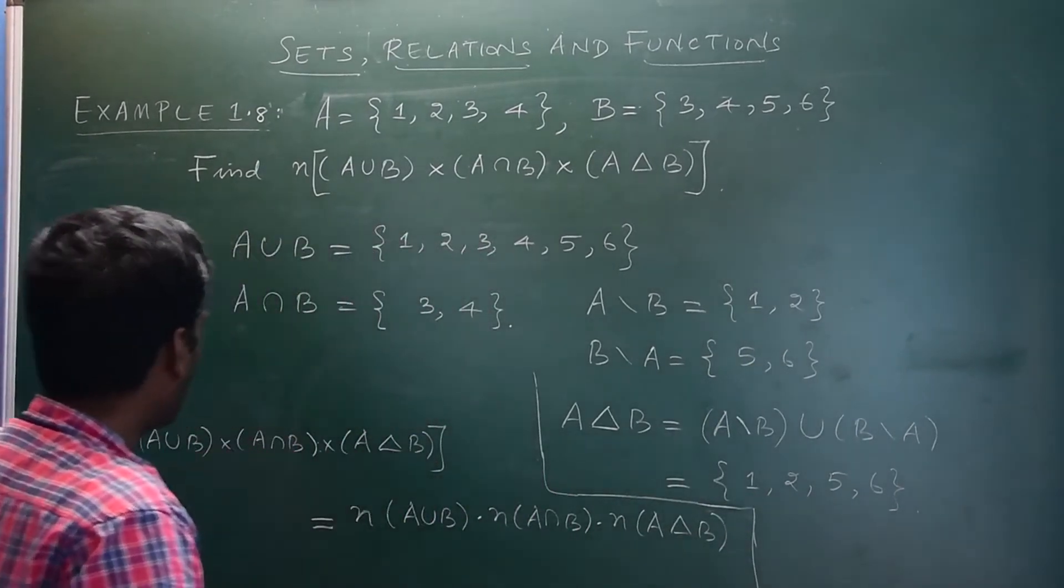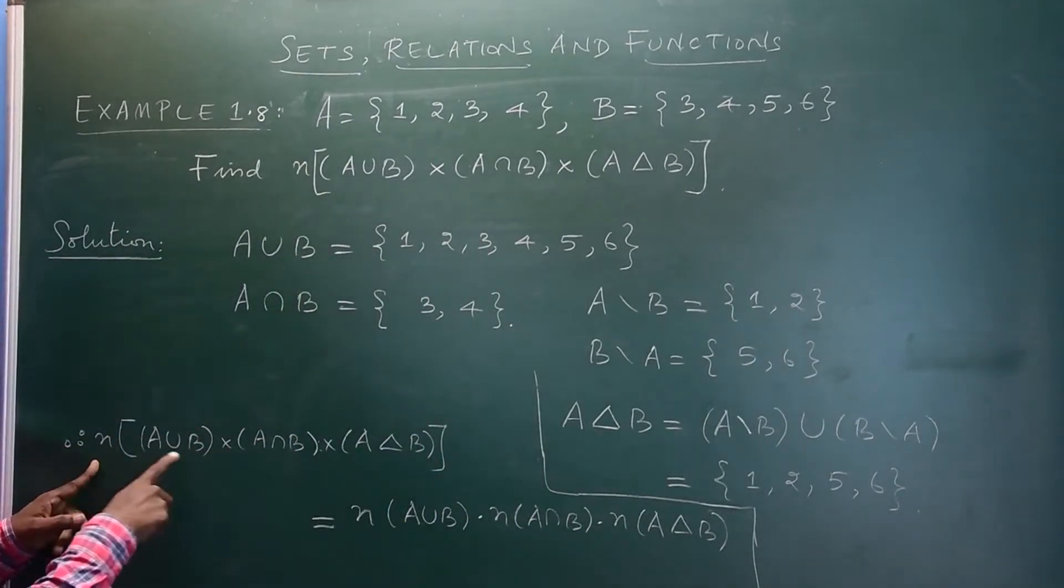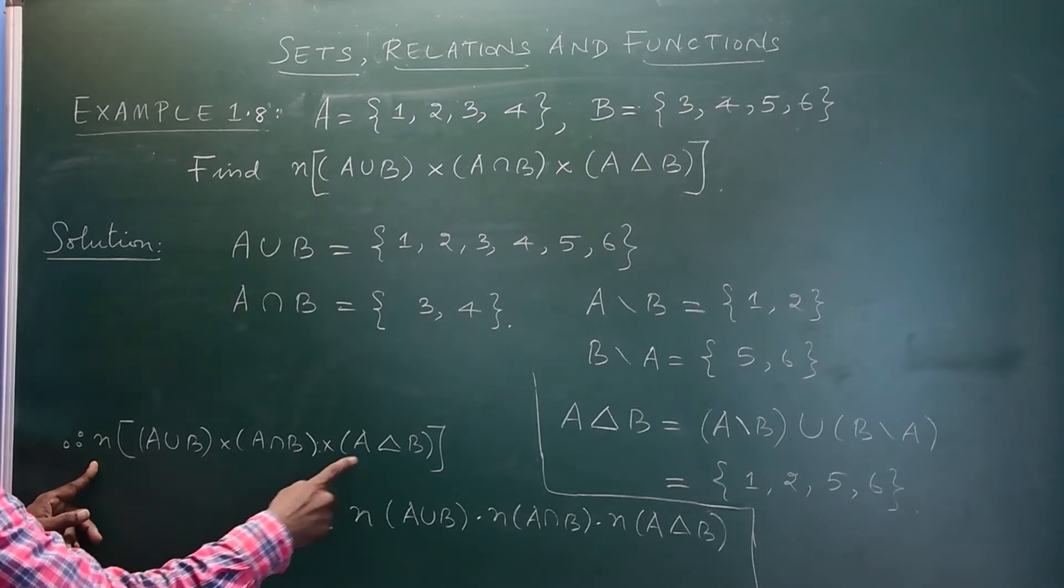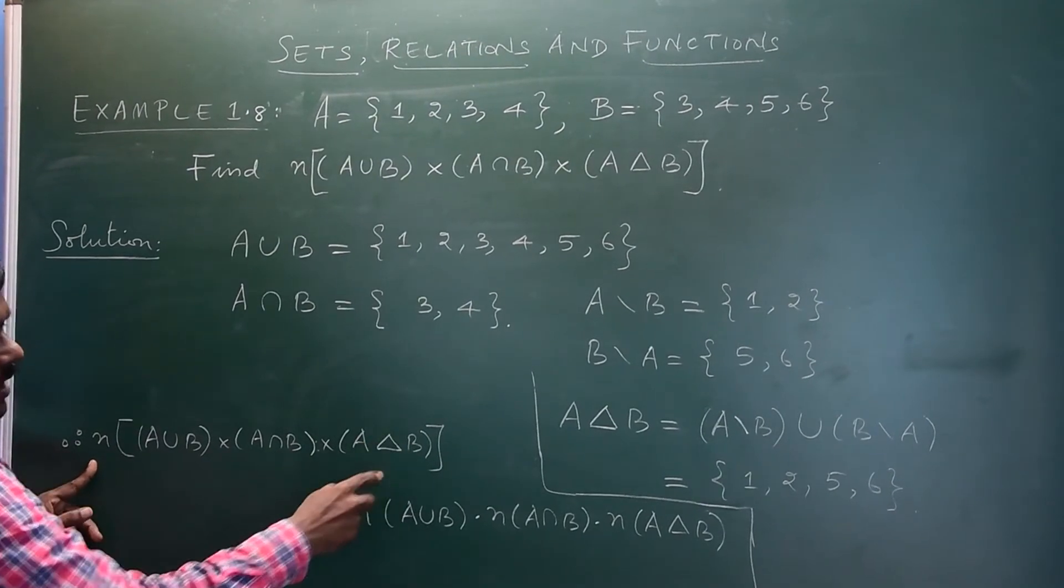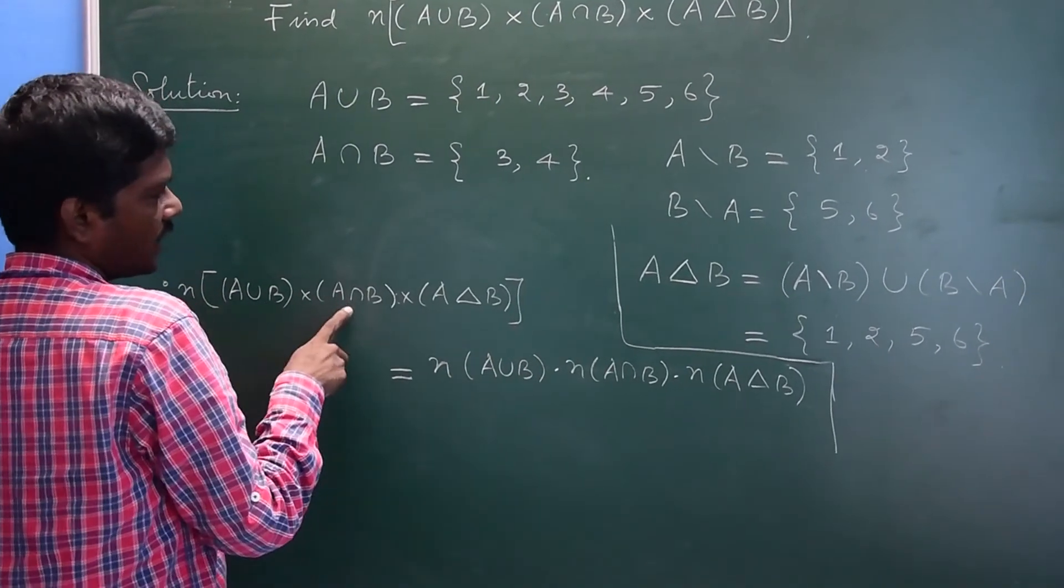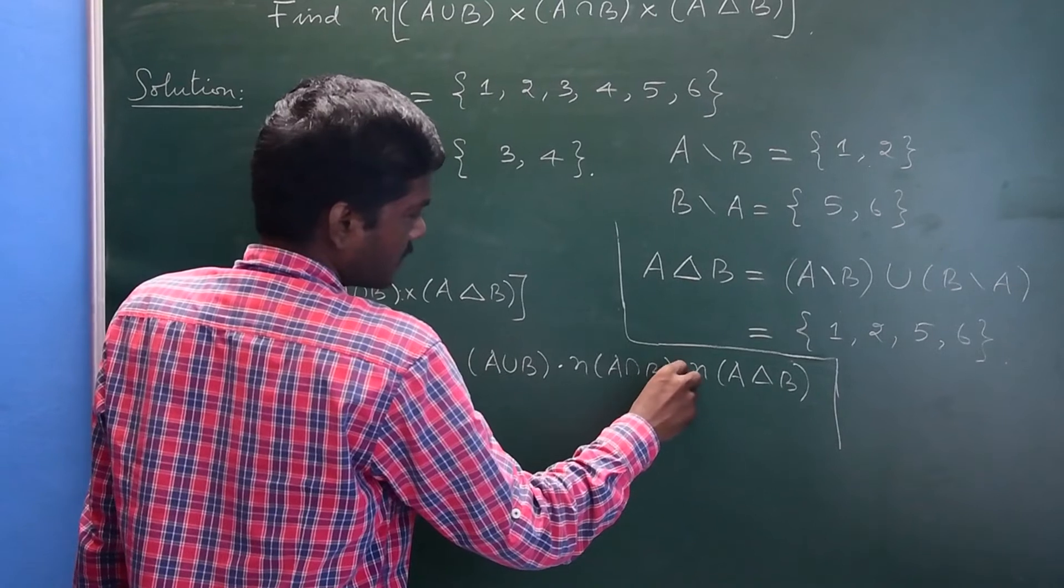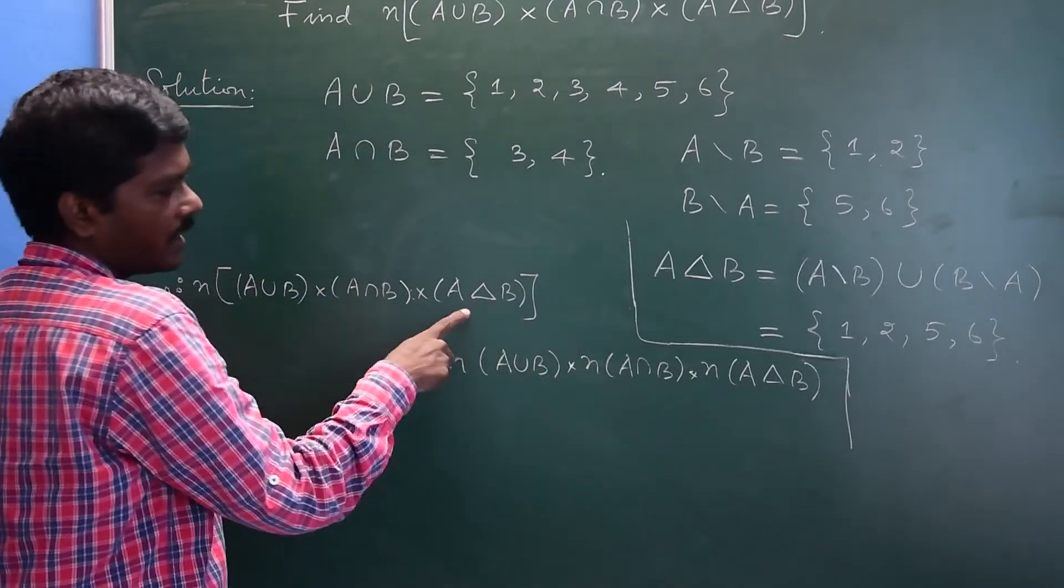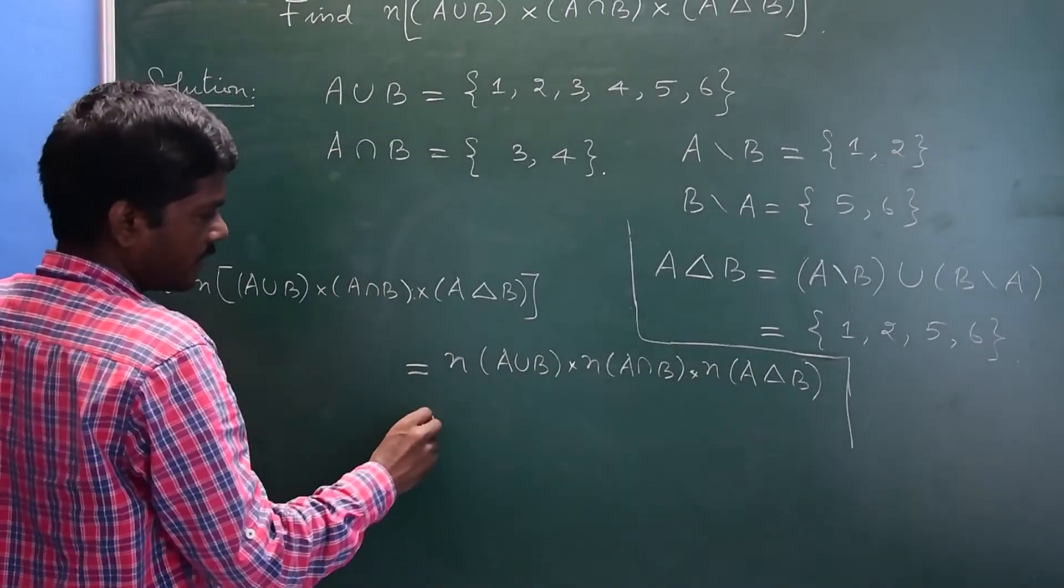Now, the cardinality of A union B cross A intersection B cross A delta B equals the cardinality of A union B times cardinality of A intersection B times cardinality of symmetric difference of A and B.